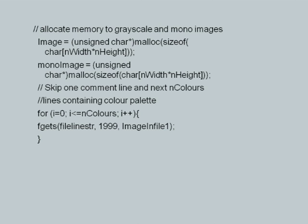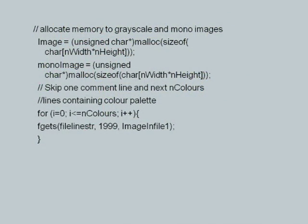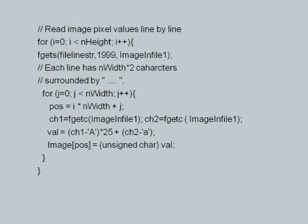Now I simply go through the lines of the XPM file and one by one extract information. I skip one line and the next n_colors lines — because I do not require to read the color palette since the scheme is well known to me. I get a line string, which is the actual pixel string. This is i equal to 0 to less than or equal to n_colors — I simply skip over these. Now I read image pixel values line by line. Each line has n_width times 2 characters because each pixel is represented by a 2 ASCII character code, surrounded by double quotes.